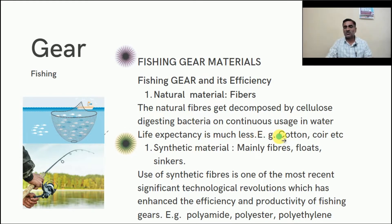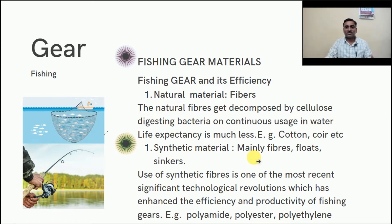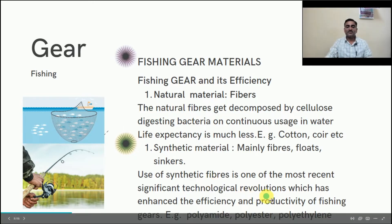For example, cotton fiber is a natural fiber from which we can make cotton nets, coir rope, or coir netting. Synthetic materials mainly consist of synthetic fibers, floats, and sinkers. The use of synthetic fiber is one of the most recent technological advancements, which has enhanced the efficiency and productivity of fishing gear.